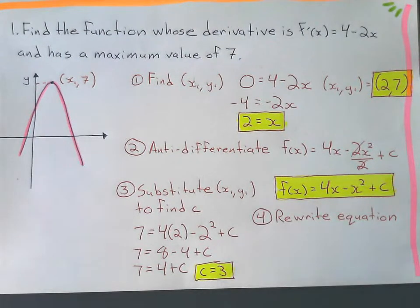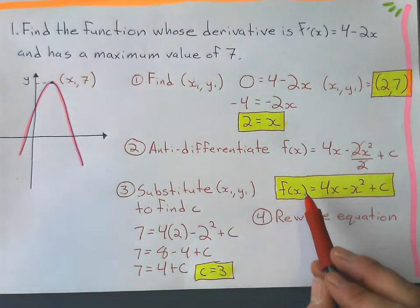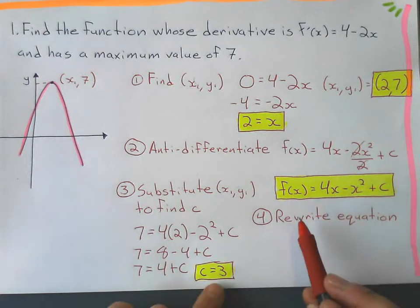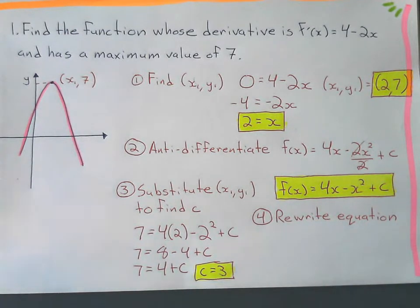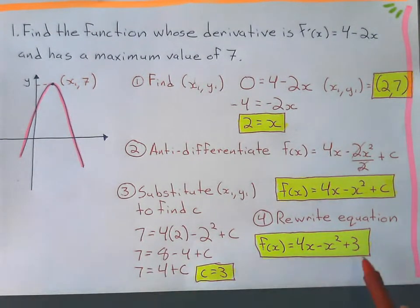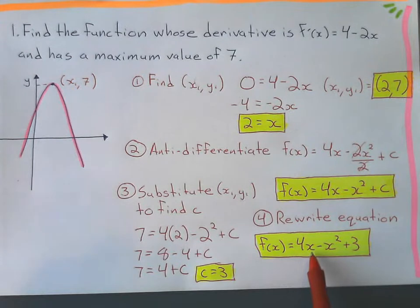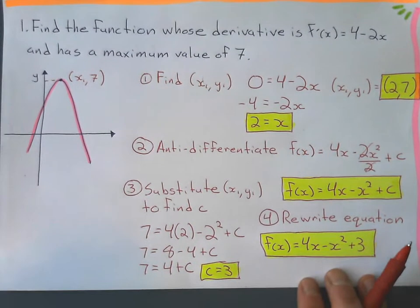My last step is to rewrite the equation. I'm looking for the original function, and I just put in 3 for c. Here's our final answer — here's the original function, here's the gradient function, and here's the max point. Let's try another one.